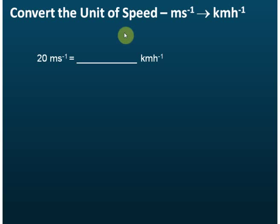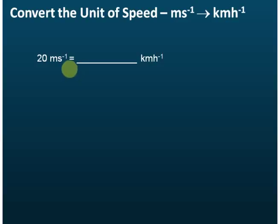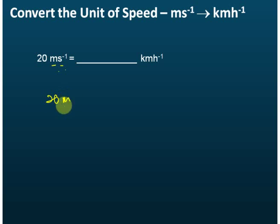Now let's see another example. This time we convert meters per second to kilometers per hour. So 20 meters per second is equal to how many kilometers per hour? As we learned, if you see a quantity with a unit of something per something and you're asked to convert, write it in fraction form — for example, 20 meters per one second — and then start the conversions.